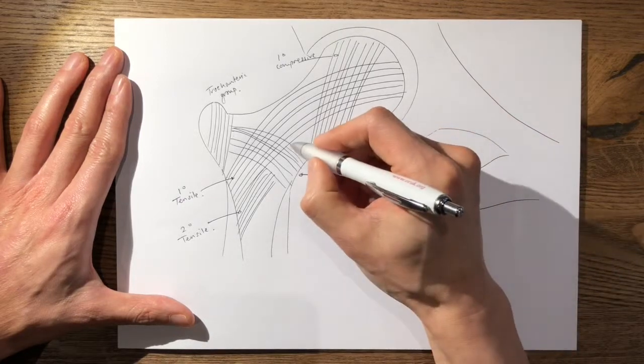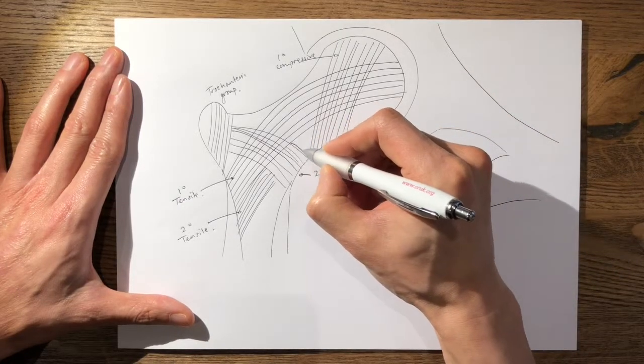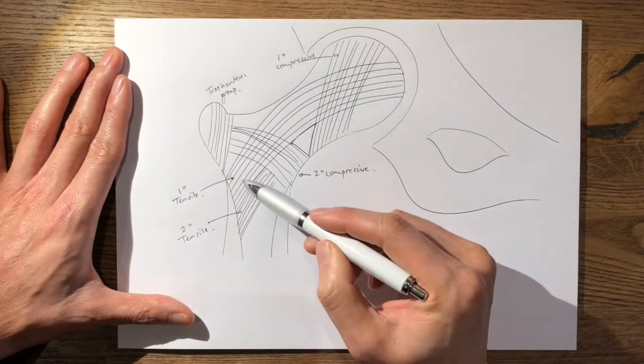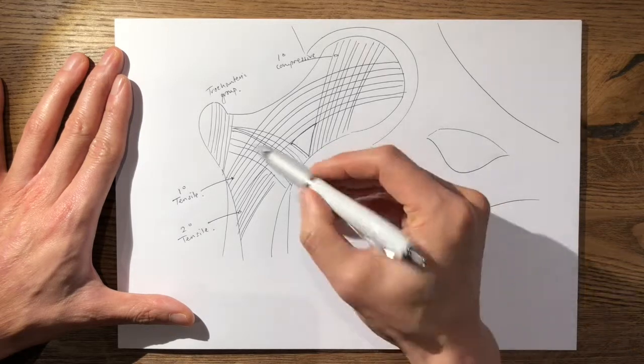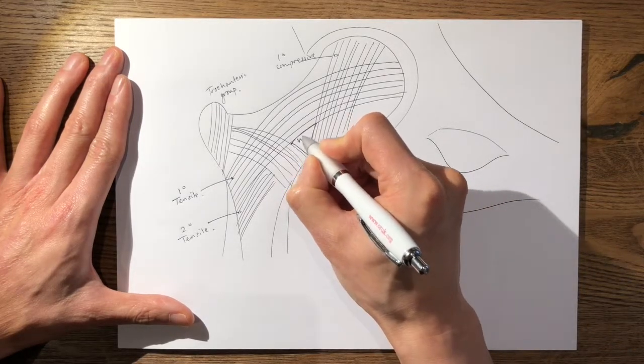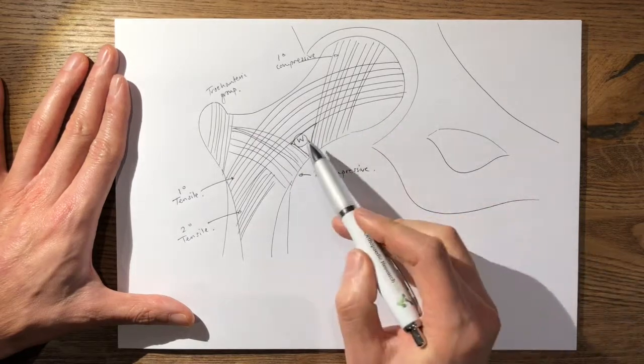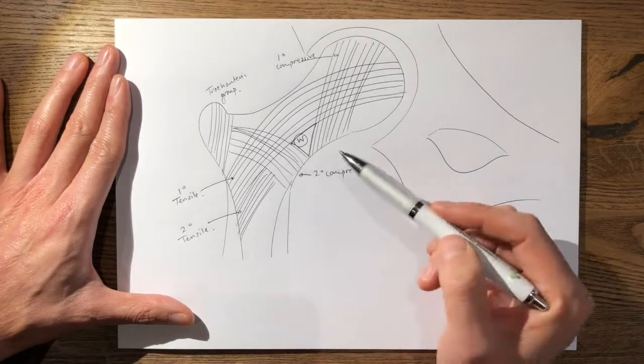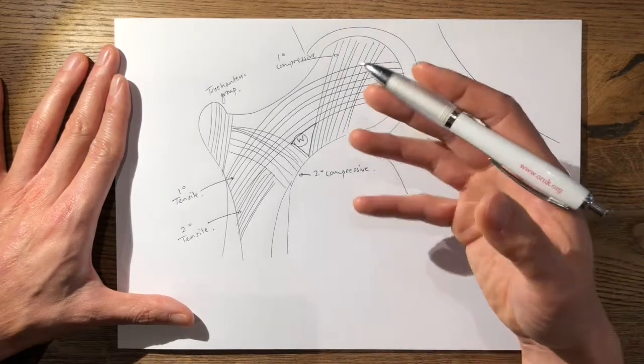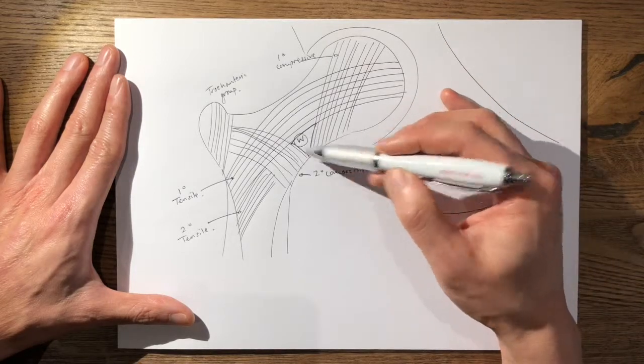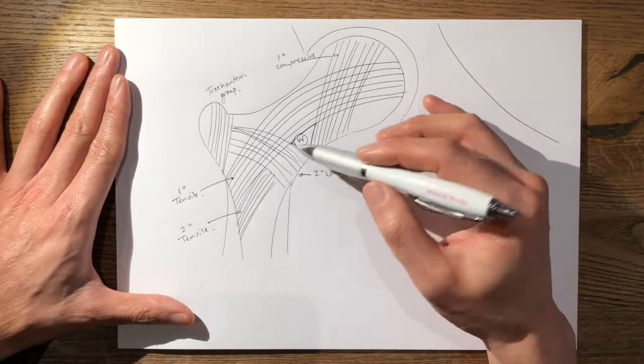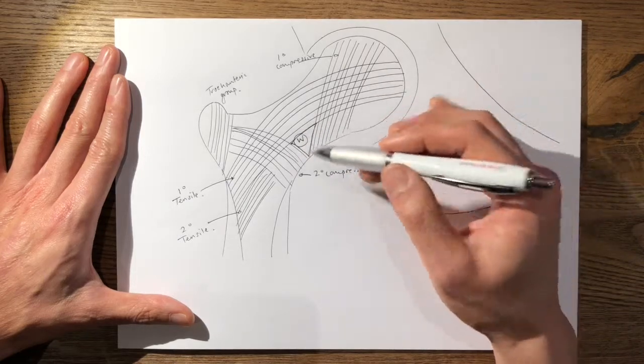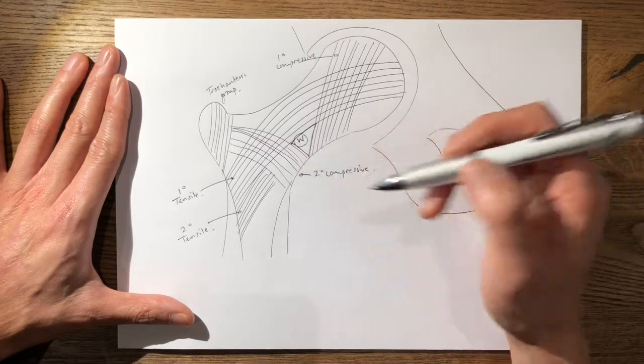And you can see that there's a triangle which is formed here between the primary compressive group, the primary tensile group, and the secondary compressive group. And this triangle is called Ward's triangle. Ward's triangle is purely a radiolucency seen on an X-ray between these three groups. And it's also the area when you do a DEXA scan which shows the lowest bone mineral density purely because it's an area which is rather absent of these trabecular patterning. And therefore the bone mineral density is usually lowest in this triangular area.